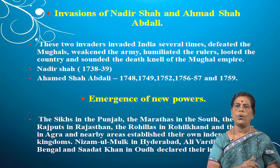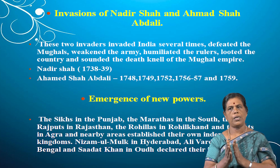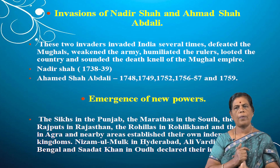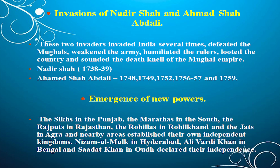The emergence of new powers was another reason. Because of the weak successors and character of the Mughal rulers, new powers emerged: the Sikhs in Punjab, the Marathas in the south, the Rajputs in Rajasthan, the Rohillas in Rohilkhand, and the Jats in Agra and nearby areas all established their own independent kingdoms. Nizam-ul-Mulk in Hyderabad, Alivardi Khan in Bengal, and Saadat Khan in Awadh also declared their independence.